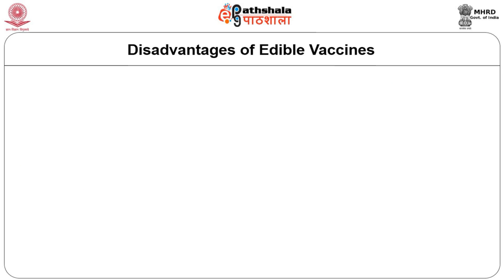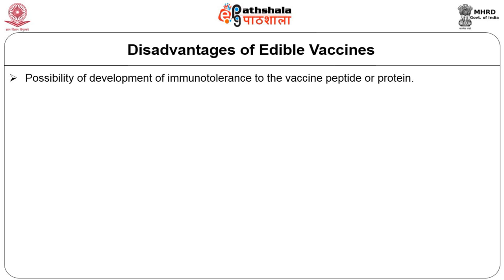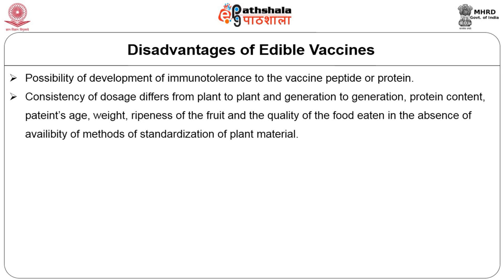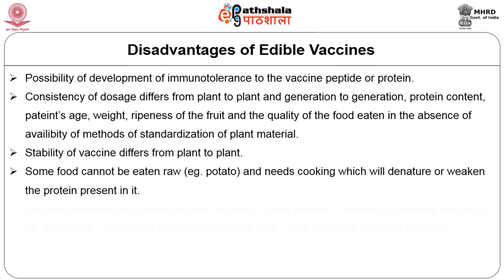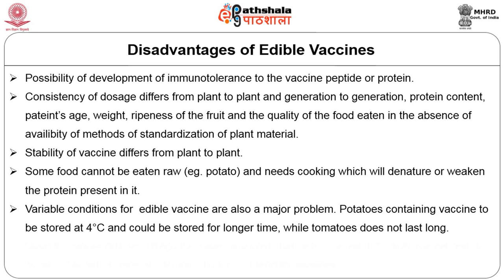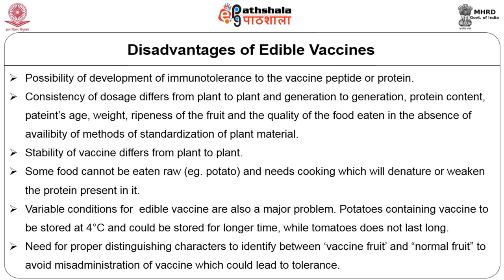Disadvantages: number one, the possibility of development of immune tolerance to the vaccine peptide or protein may arise; number two, consistency of dosage differs from plant to plant and generation to generation, depending on protein content, patient age, weight, ripeness of the fruit and food quality; number three, stability of the vaccine differs from plant to plant; number four, some foods cannot be eaten raw — for example potato needs cooking, which will denature or weaken the vaccine protein; number five, variable storage conditions are a problem — potatoes containing vaccine should be stored at 4°C and can be stored for longer, while tomatoes do not last long; number six, proper distinguishing characteristics between a vaccine fruit and a normal fruit must be identified to prevent misadministration leading to tolerance.